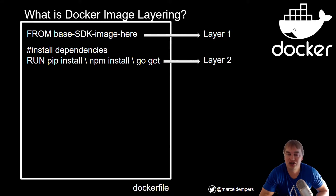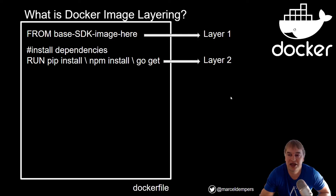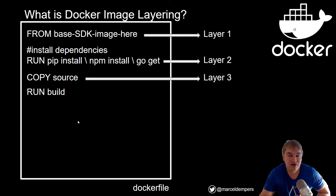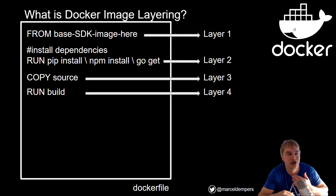The Docker image we built in parts one and two is a basic development environment — we mount our source code in, run the build command for whatever programming language, and start the application manually. That's not really an image we can deploy to production. In this video we're going to add a COPY command inside the Dockerfile to bring source code in as layer three, then run the build statement to produce our assembly as layer four.